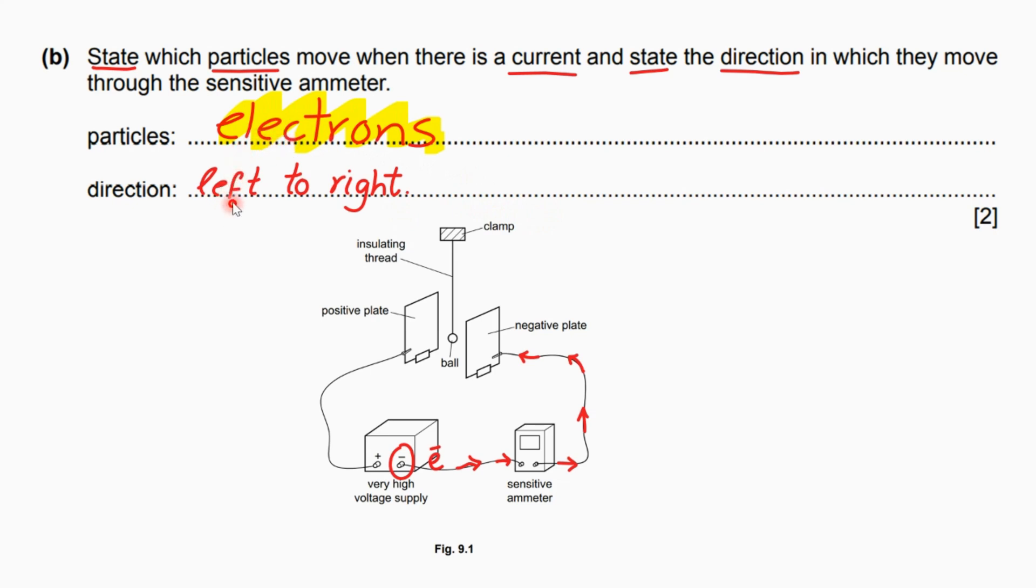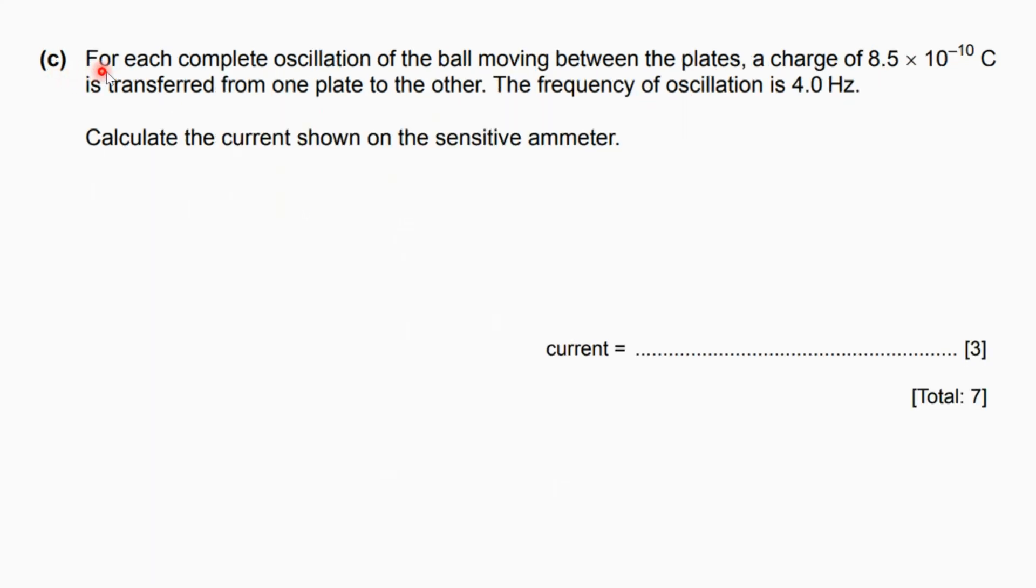This question has two marks: one mark for mentioning the type of electrons or the nature of the particles and the second one for showing the direction exactly. For part c, for each complete oscillation of the ball moving between the plates, a charge of 8.5 times 10^-10 coulombs is transferred from one plate to the other.